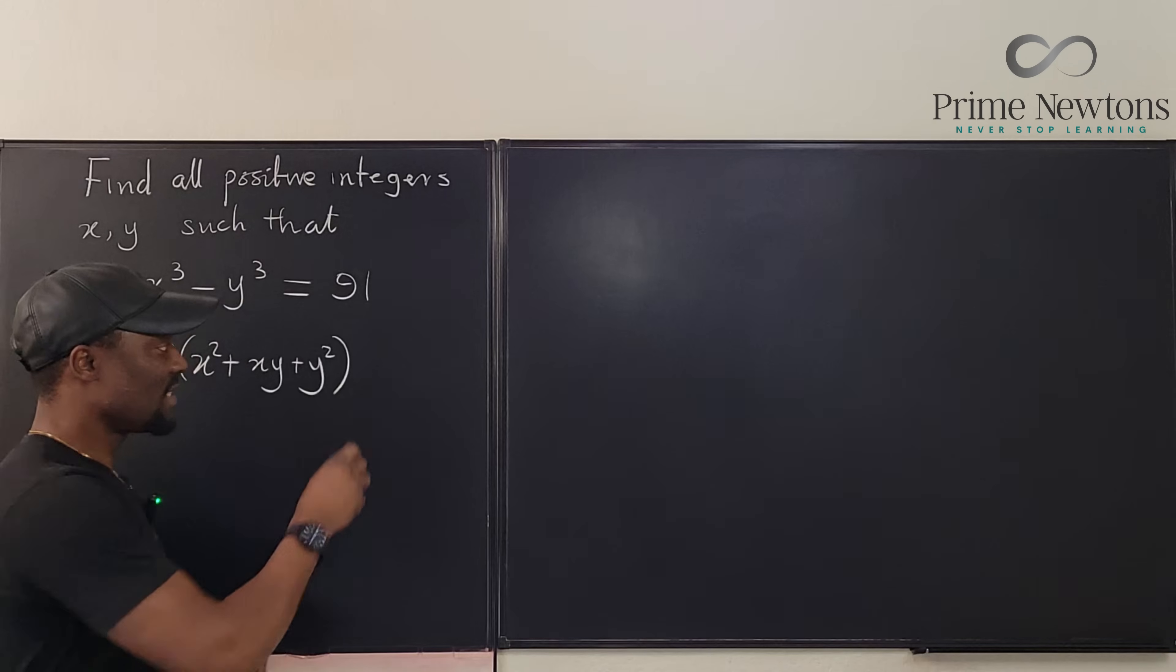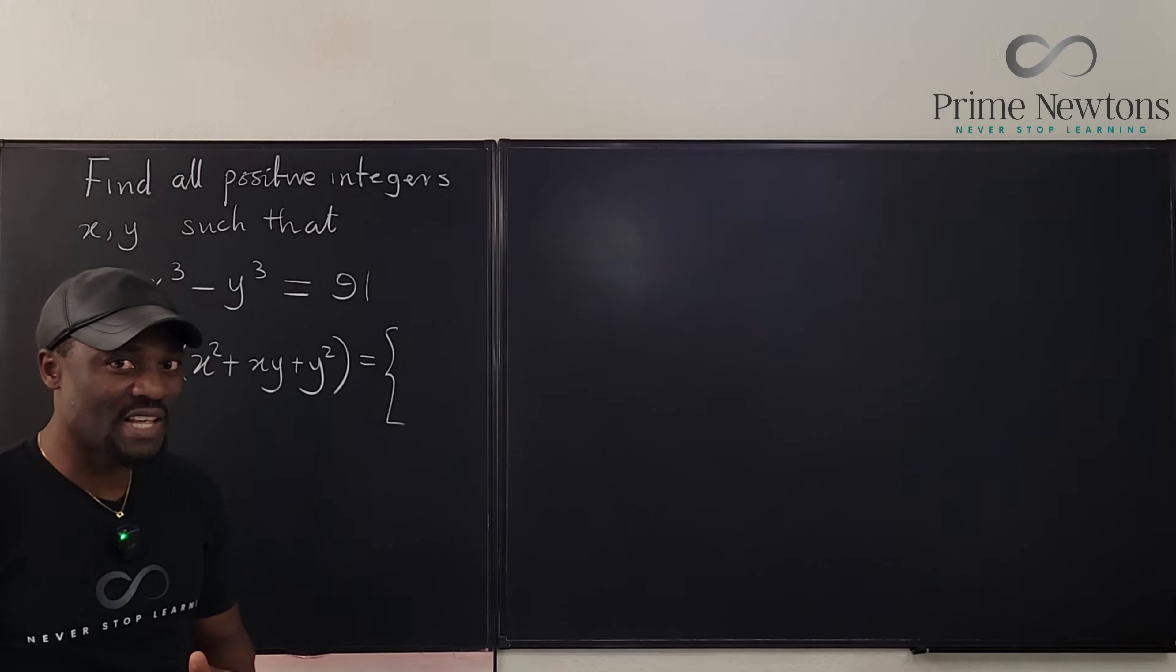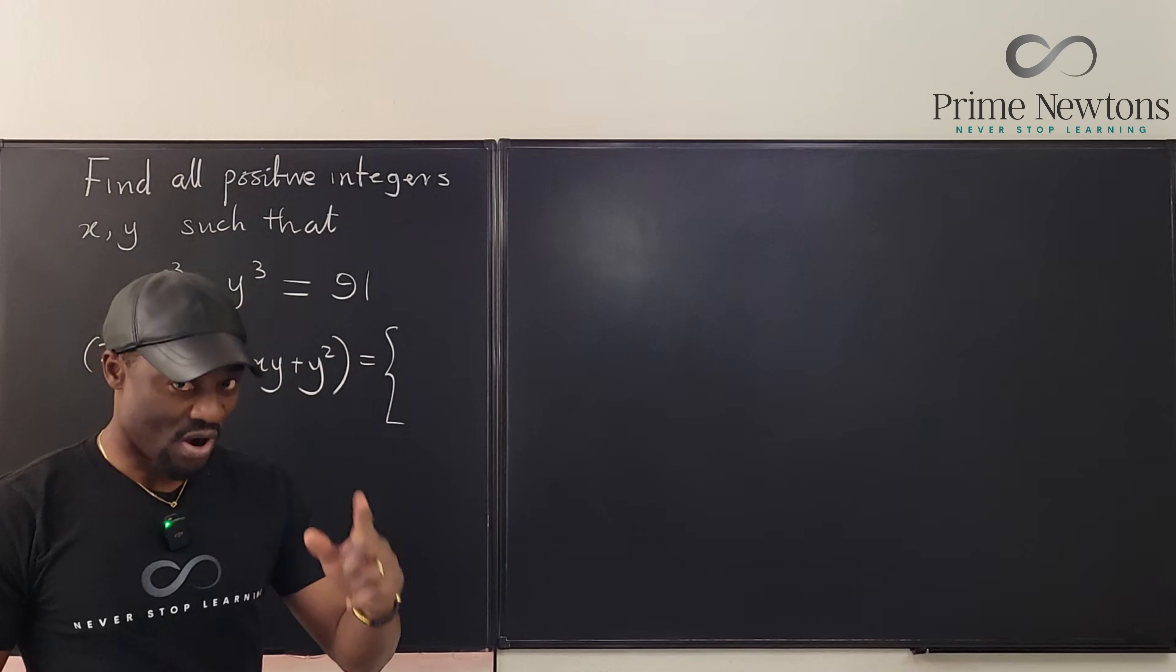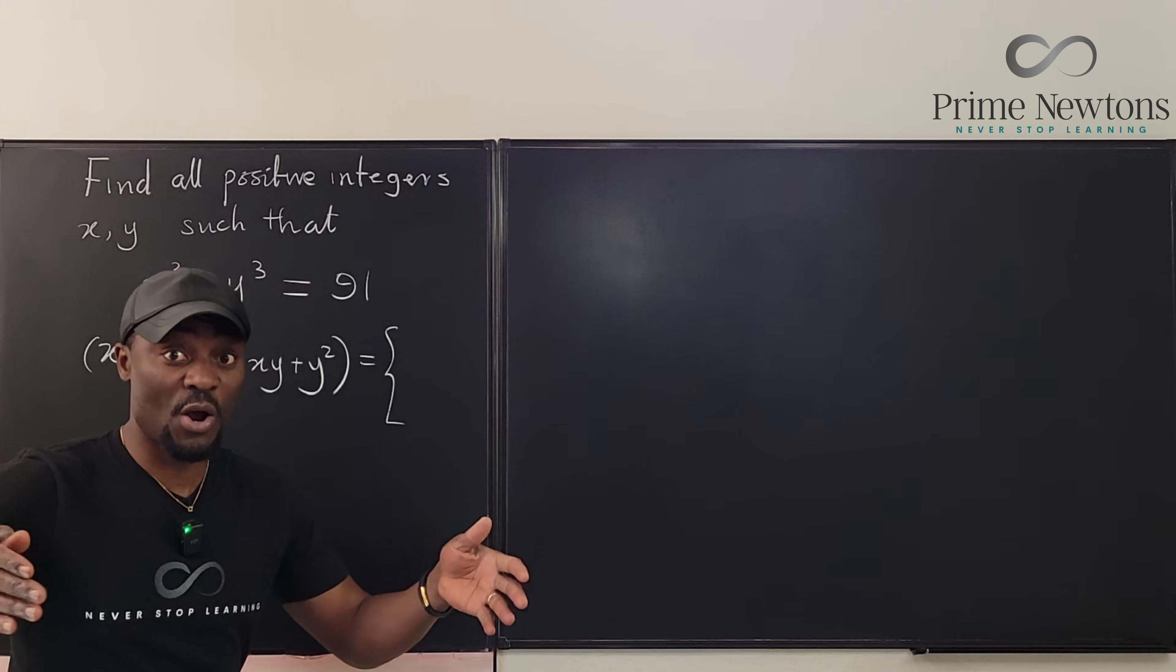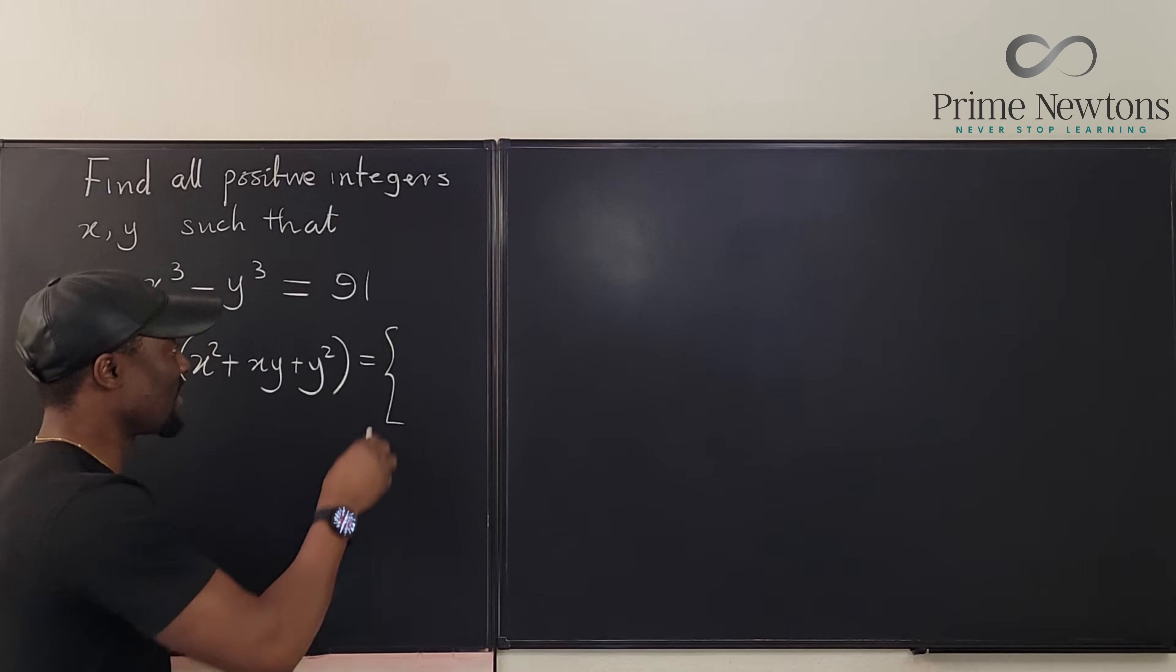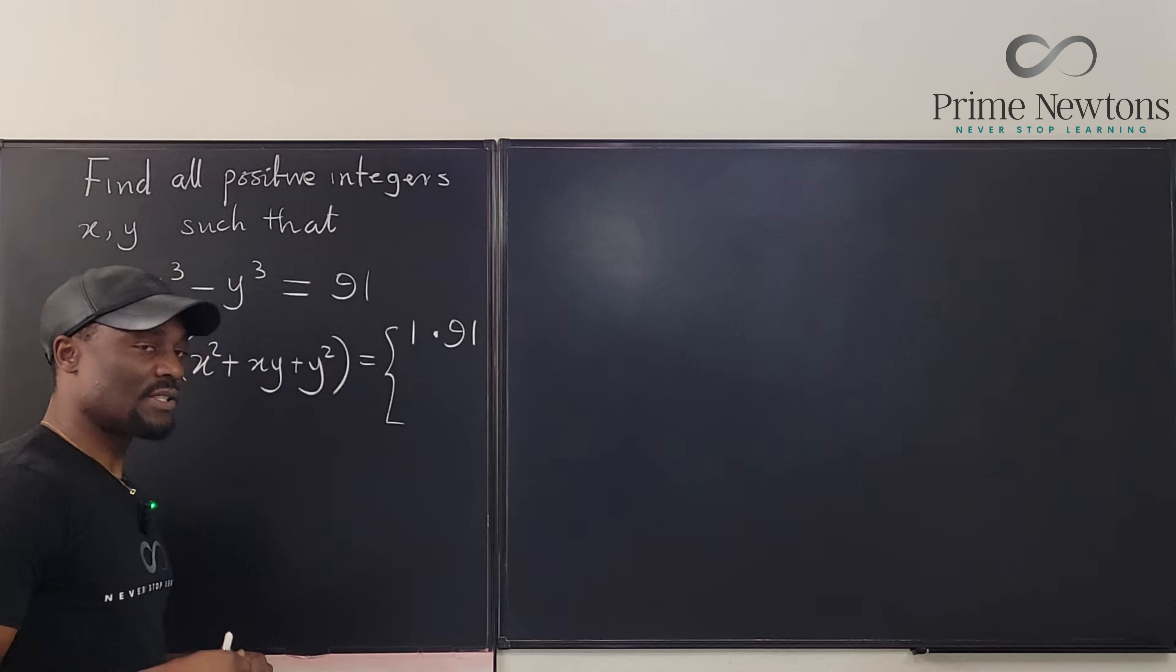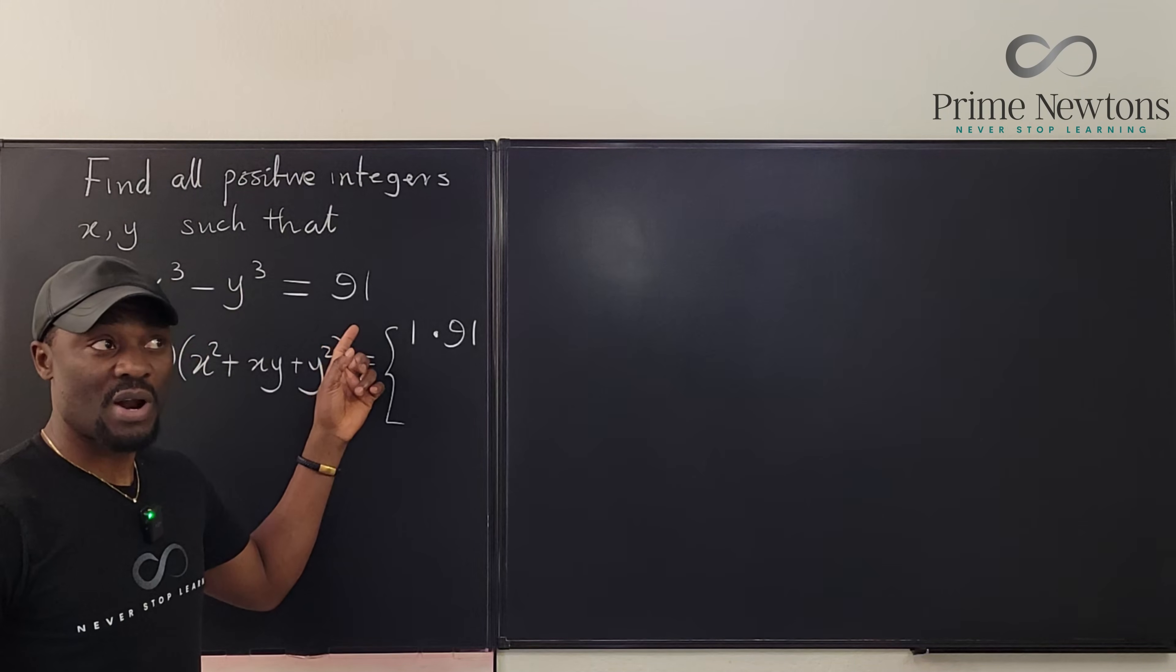Now this is equal to one of two cases because 91 can be written as the product of one and 91. That's the first option. You must always consider that option whenever you solve a problem like this. So it's going to be one times 91. Now let's see, what else divides 91? Because 91 is not a prime number.